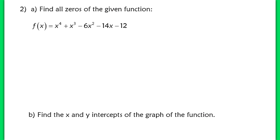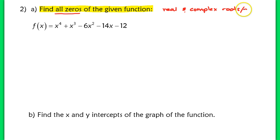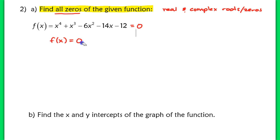In example 2, the directions have us finding all zeros of the given function. The fact that it says all zeros means we're looking for real and complex roots or zeros — roots and zeros mean the same thing. So we're looking for all complex roots and zeros. A zero is any value of x that satisfies the equation f of x equals 0. So what we're going to do is set this function equal to 0 and try to solve.